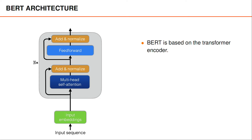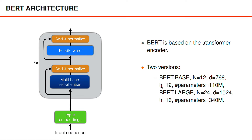The BERT architecture is based on the transformer encoder. This means that we first take the input sequence and create embeddings for each element in the sequence. These vectors are then fed into a sequence of N encoder blocks, where each block contains multi-head attention, add and normalize, a feed-forward layer, and an add and normalize layer. The original paper presented two versions: BERT-BASE with N=12 encoder blocks, D=768 element embeddings, H=12 attention heads, and roughly 110 million parameters; and BERT-LARGE with more layers, longer vectors, more heads, and roughly 340 million parameters.